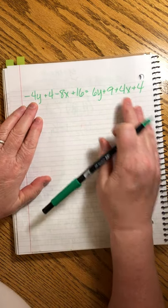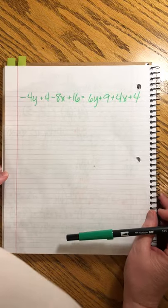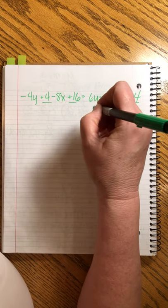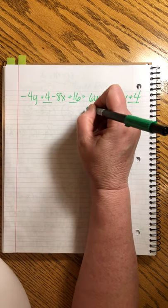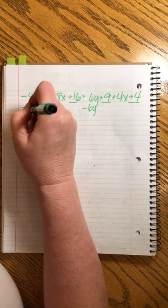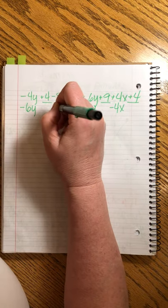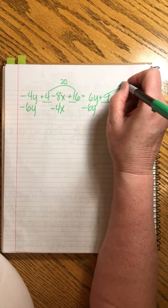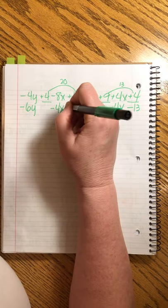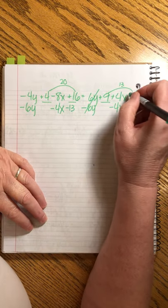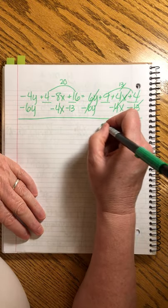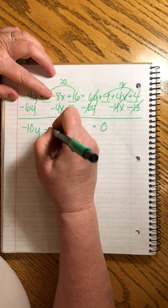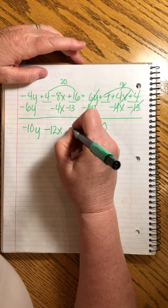So we're going to have -4y + 4 - 8x + 16 = 6y + 9 + 4x + 4. Now, what we want to do is we want to add like terms and then we want to swim everything this way. So the first thing I'm going to do is copy this down at the top of the next page. Let's combine the like terms. And then let's subtract everything and bring it this way.